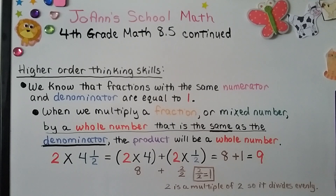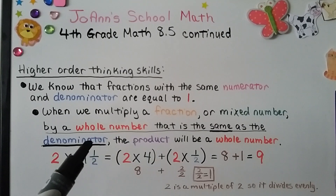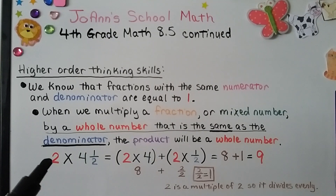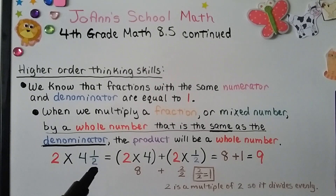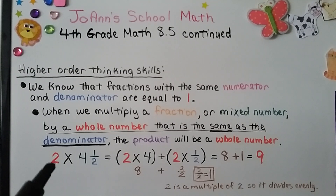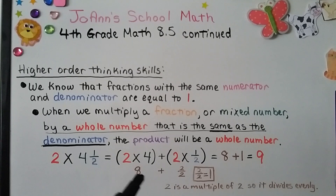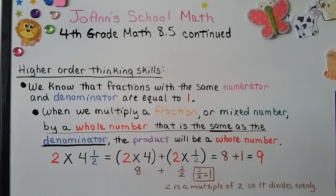Now let's do some higher order thinking. Fractions with the same numerator and denominator equal 1 whole. When we multiply a fraction or mixed number by a whole number that is the same as the denominator, the product will be a whole number. For example, with 2 times 4 and 1 half — the whole number is 2 and the denominator is 2. We do 2 times 4 to get 8, then 2 times 1 half gives 2 halves, which is 1. So 8 plus 1 equals 9. The numerator 2 is a multiple of denominator 2, so it divides evenly — a whole number.